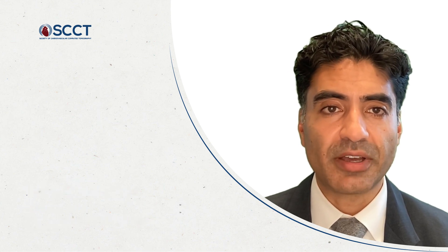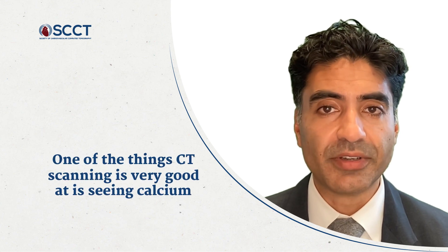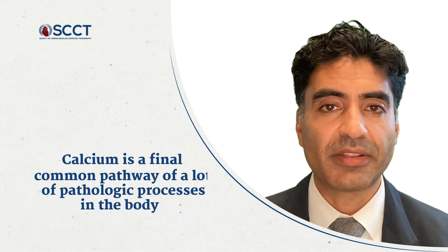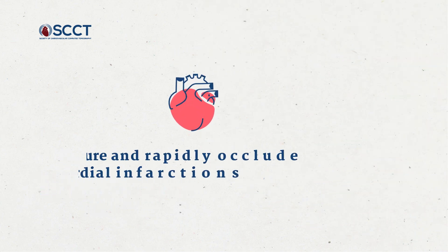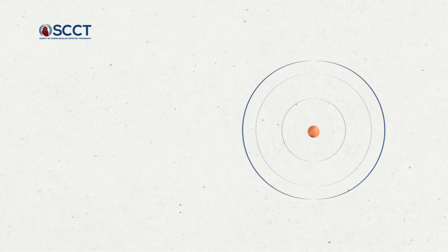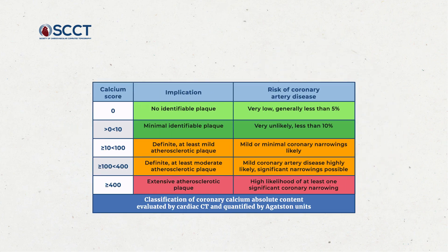Coronary artery calcium CT is done without contrast and can be done in about 10 minutes. One of the things CT scanning is very good at is seeing calcium. Calcium is a final common pathway of a lot of pathologic processes in the body. Plaques that rupture and rapidly occlude an artery can cause myocardial infarctions or heart attacks and cardiovascular disease. These little specks of calcium are a tip-of-the-iceberg phenomenon, showing us only part of a plaque. The test shows not just whether it's present, but also can see how much and quantify the calcium with an Agatston score.